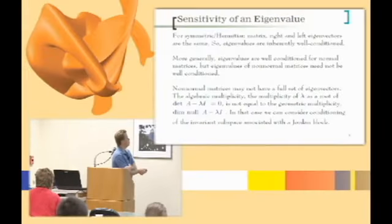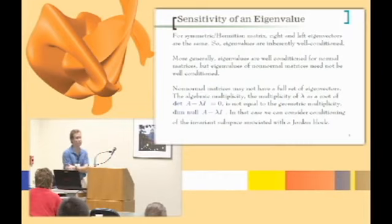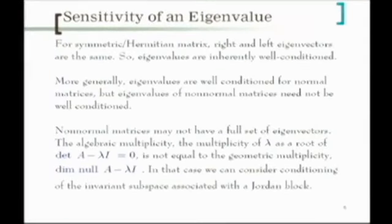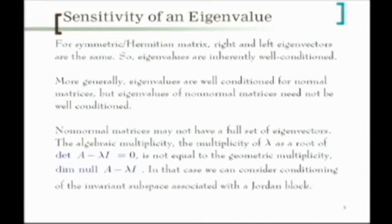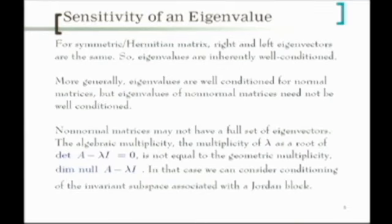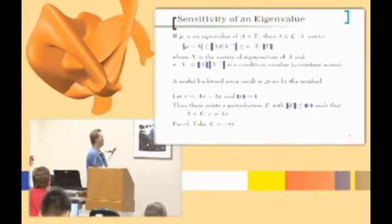For non-normal matrices — Hermitian matrices are always normal — the eigenvectors may not be orthogonal, and you may not even have a full set of eigenvectors. For an n-by-n matrix, you may not have n independent eigenvectors — you get what are called Jordan blocks. Mathematically, it means the algebraic multiplicity (the multiplicity of λ as a root of the characteristic equation) is not the same as the dimension of the null space of (A − λI). That's a much more complicated problem, especially because computing Jordan decompositions is unstable.